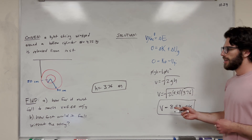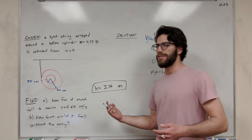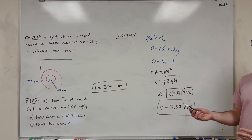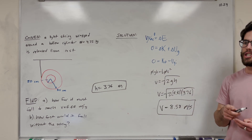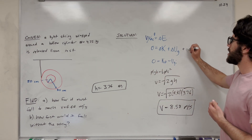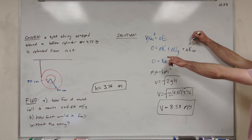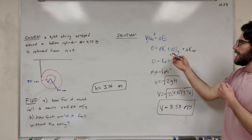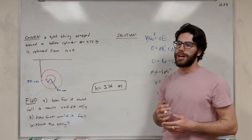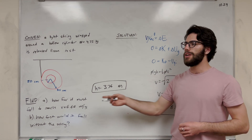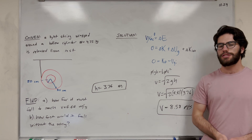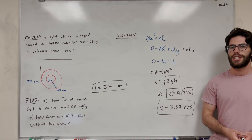So for part C — we found that velocity is greater when it isn't on the string. The reason is that when the cylinder is attached and rotating, some of that gravitational potential energy gets converted into rotational kinetic energy, leaving less to become linear kinetic energy. When it's not attached, all the potential energy converts entirely to linear kinetic energy, resulting in a higher speed. Both scenarios conserve total energy, but the partition differs.